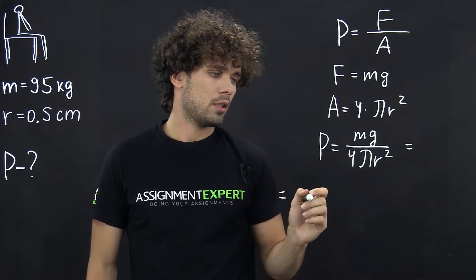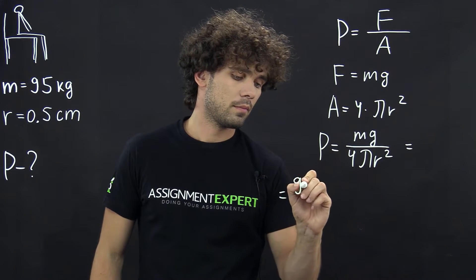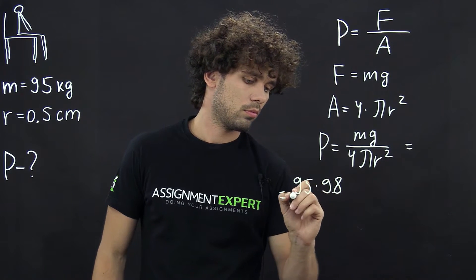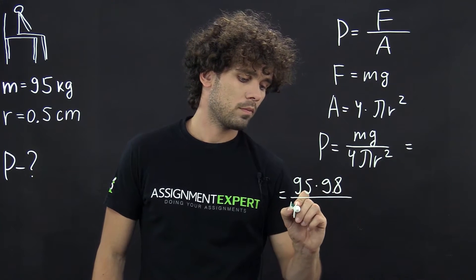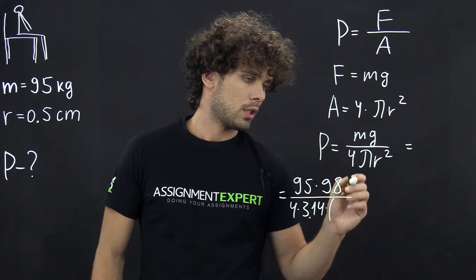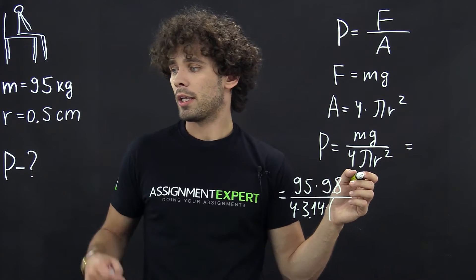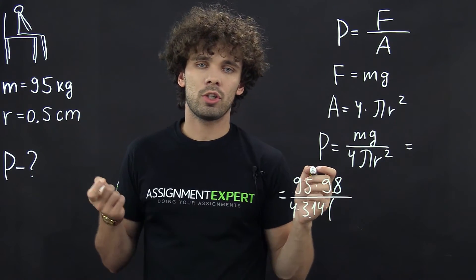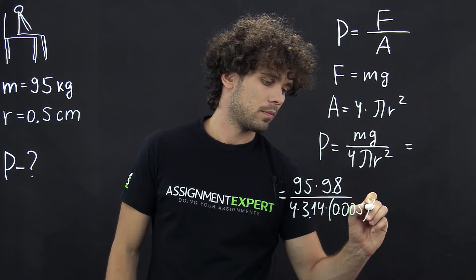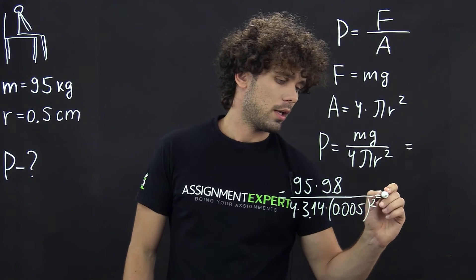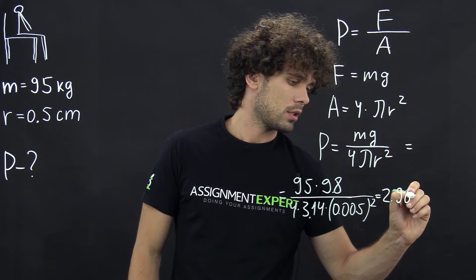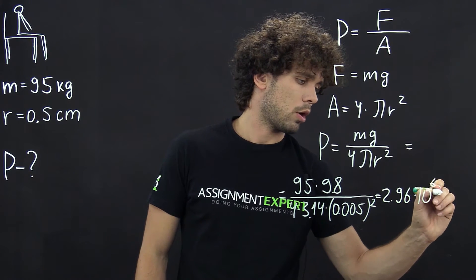In our case, this gives the following: 95 times 9.8, over 4 times 3.14 times r squared. Here we need to change units from centimeters to meters, so we have 0.005 squared. This gives us 2.96 times 10 to the sixth power pascals.